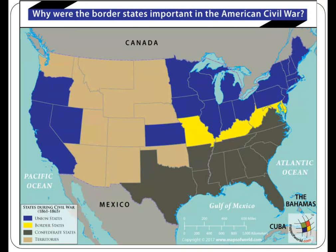The border states are an area we've not spent a lot of time talking about, but it's important to understand that we have four states that legally had slavery in 1861 but did not secede with the other 11 states that became the Confederacy. These border states are part of the reason why the Emancipation Proclamation, when issued, only applies to those states within the insurrection — those that left or attempted to leave and become part of the Confederacy. Why the 13th Amendment becomes so important is that in order to truly abolish slavery throughout the country, as we saw with the Dred Scott decision, there would have to be an amendment to do so.